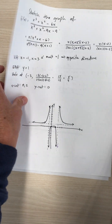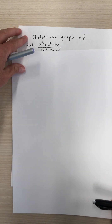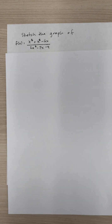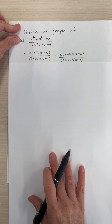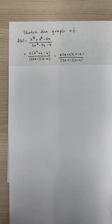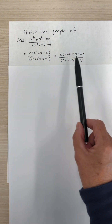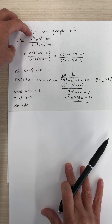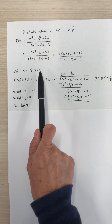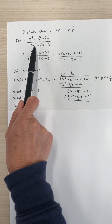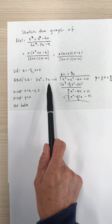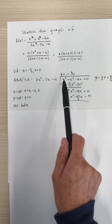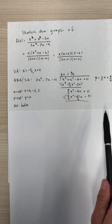Now I'll do another example with a slant asymptote. Here we have a rational function with x cubed in the numerator. After factoring, we can see vertical asymptotes, and x-intercepts at those locations. Because the numerator degree is higher than the denominator degree, there is no horizontal asymptote, but there is a slant asymptote. Dividing the denominator into the numerator gives y equals (1/2)x plus 9/4 as the slant asymptote. The vertical asymptotes are at x equals negative 1/2 and x equals 4.